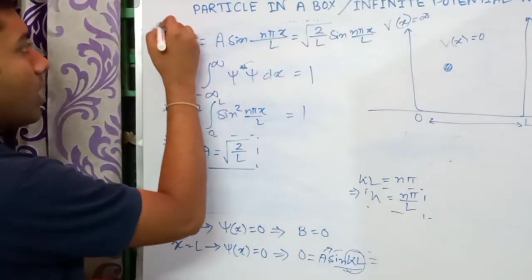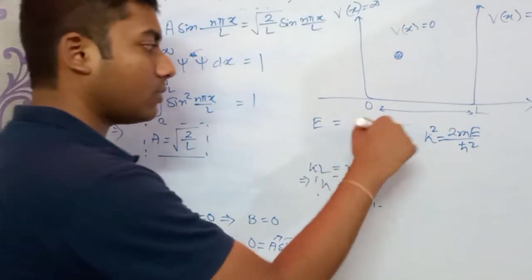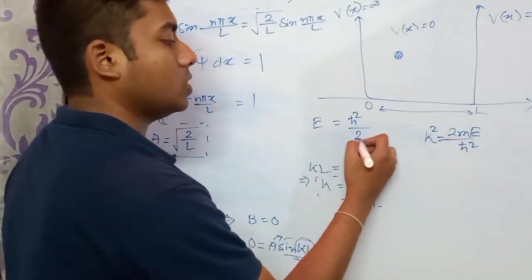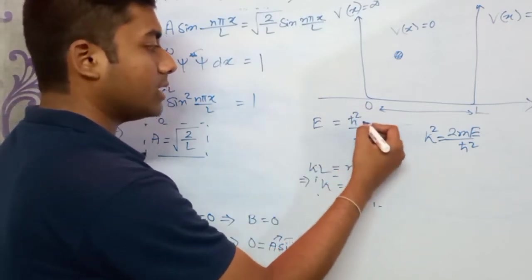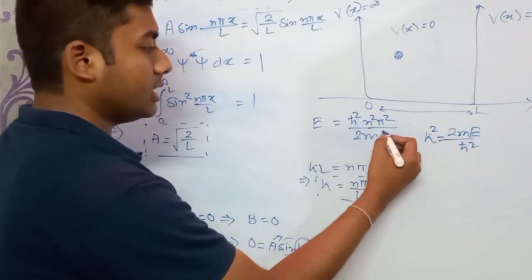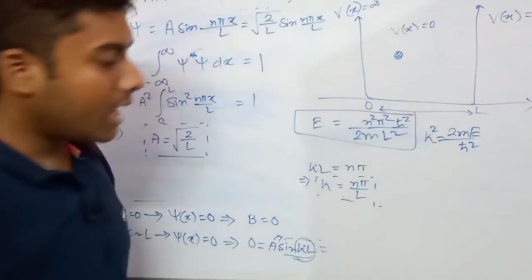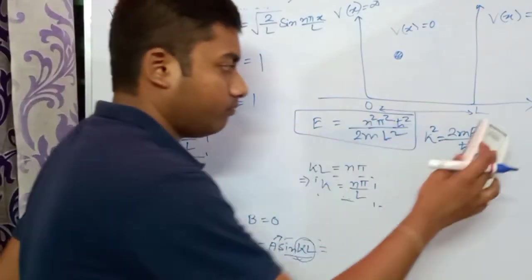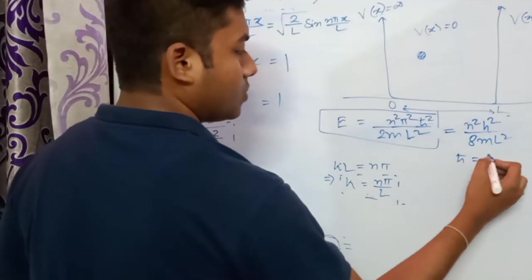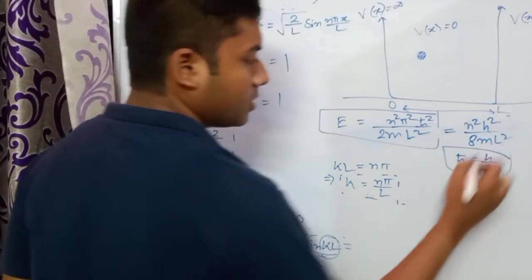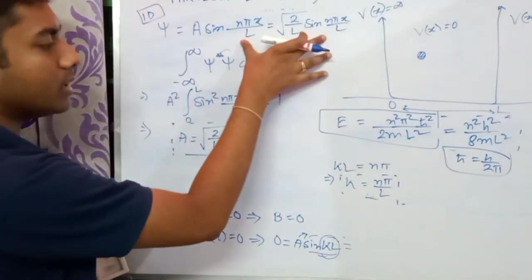This is the 1D case. Now, what is the energy of the particle? E = ℏ²k²/2m, and substituting k = nπ/L gives k² = n²π²/L². So E = n²π²ℏ²/(2mL²). This is the energy eigenvalue. Another common form uses H-cut = h/(2π), and you may also write this in terms of h directly for mathematical problem-solving. This completes the 1D infinite potential well treatment.